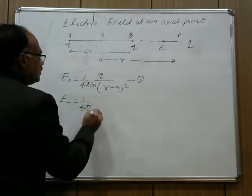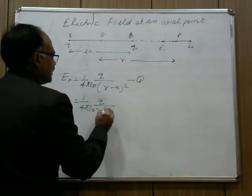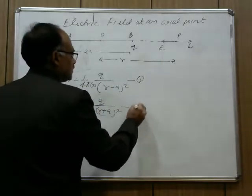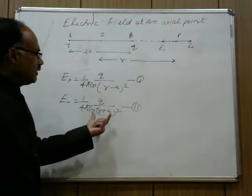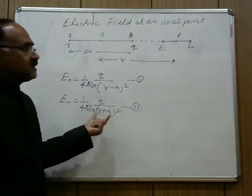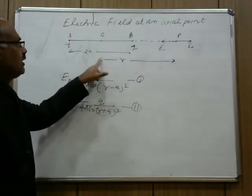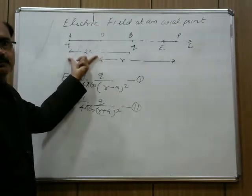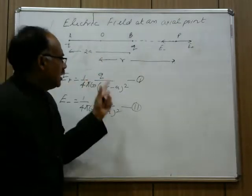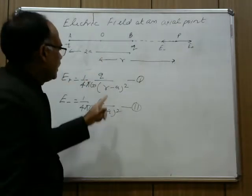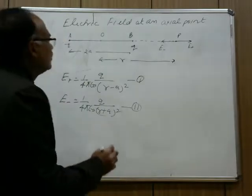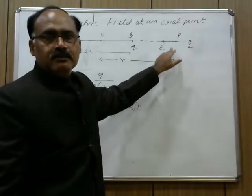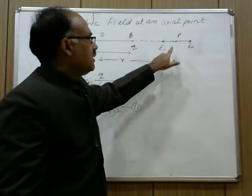For E minus, it is 1 upon 4 pi epsilon naught, q upon (r plus a) whole squared. This is equation 2. Here r plus a is the distance from the minus q charge to point P, and r minus a is the distance from plus q to point P. These two electric fields are anti-parallel to each other.